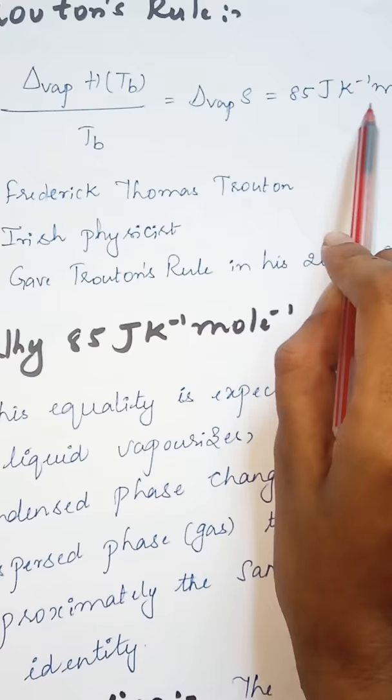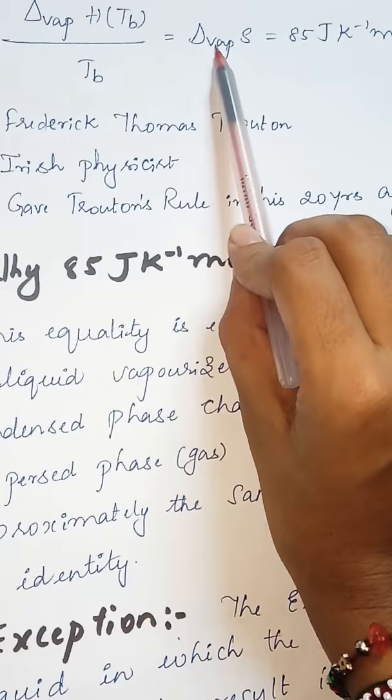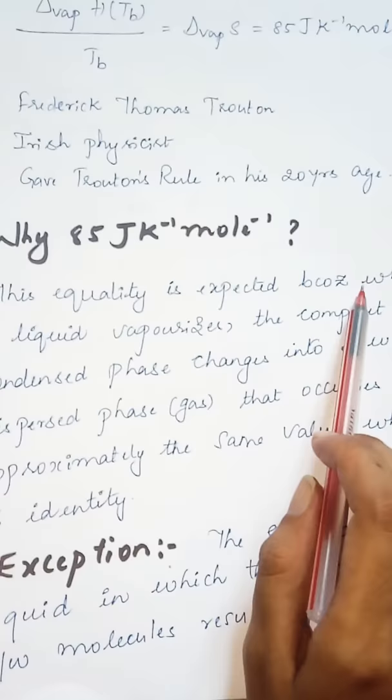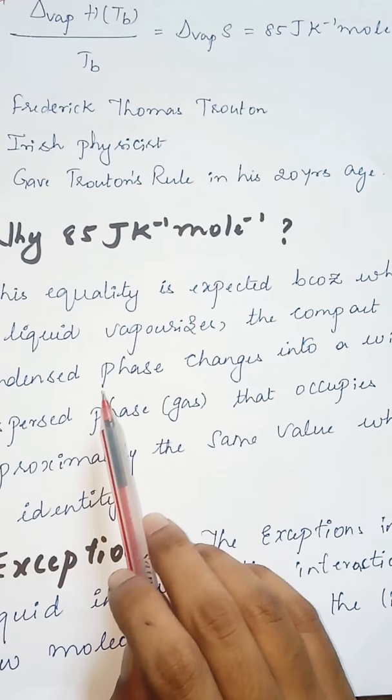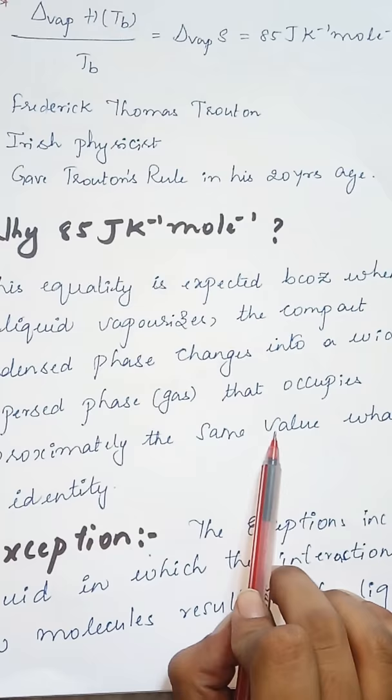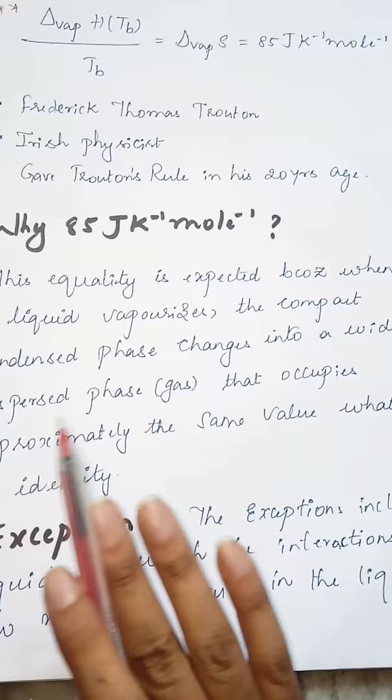Now what made him assume this value as 85? This equality is expected because when a liquid vaporizes, the compact condensed phase changes into a widely dispersed phase, that is gas phase, that occupies approximately the same value whatever its identity.